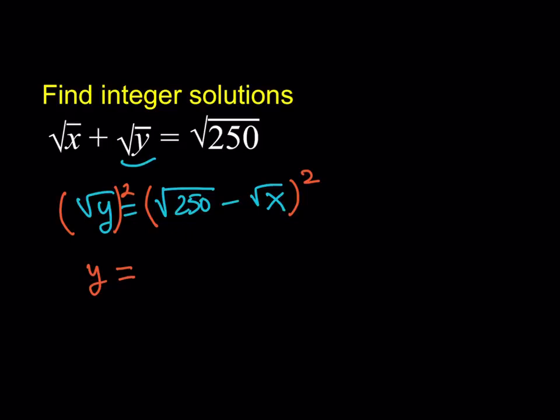If you square both sides, you're going to get rid of the radical on the left-hand side. It's going to be Y. On the right-hand side, you're going to get rid of some of the radicals, but you also have some radicals. So, when you square the first term, you're going to get 250. And then, square the second one, you're going to get X minus two times square root of 250 multiplied by the square root of X.